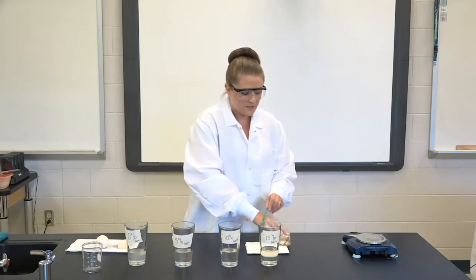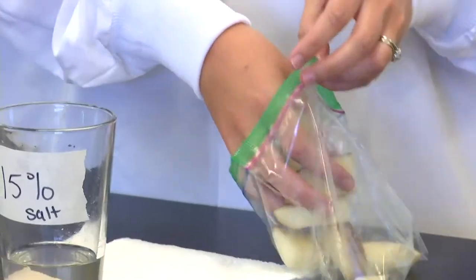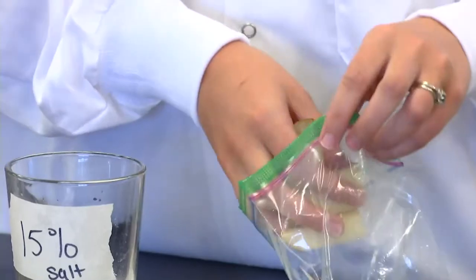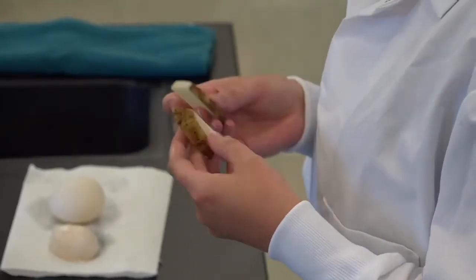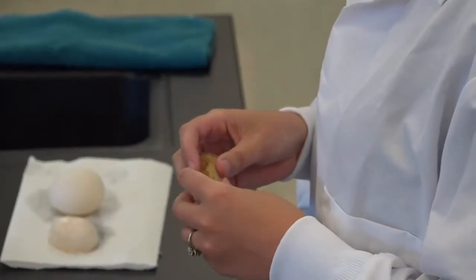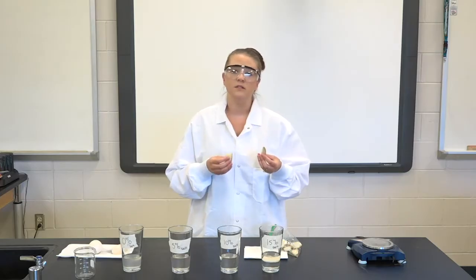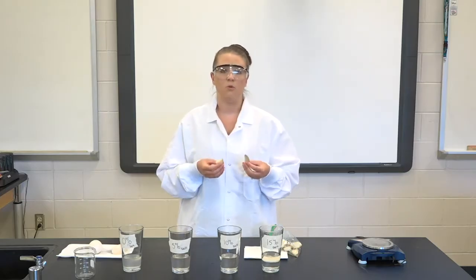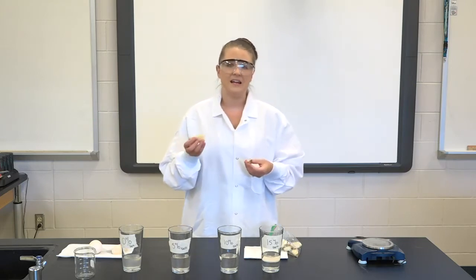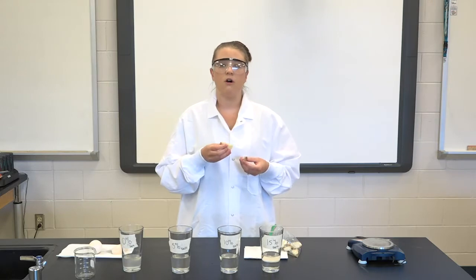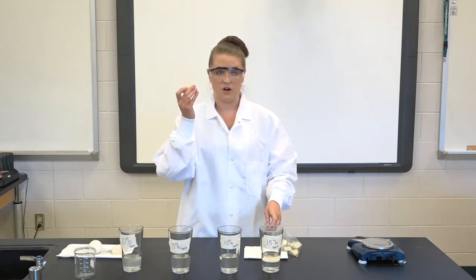I also have some potato slices. You can also use carrots or even grapes at home if you're doing this. All three of these items are made up of plant cells. I want you to remember what you know about plant cells — they have a cell membrane and a cell wall. The cell membrane lets things in and out of the cell while the cell wall is for structure and support. So these are going to act as our cells.